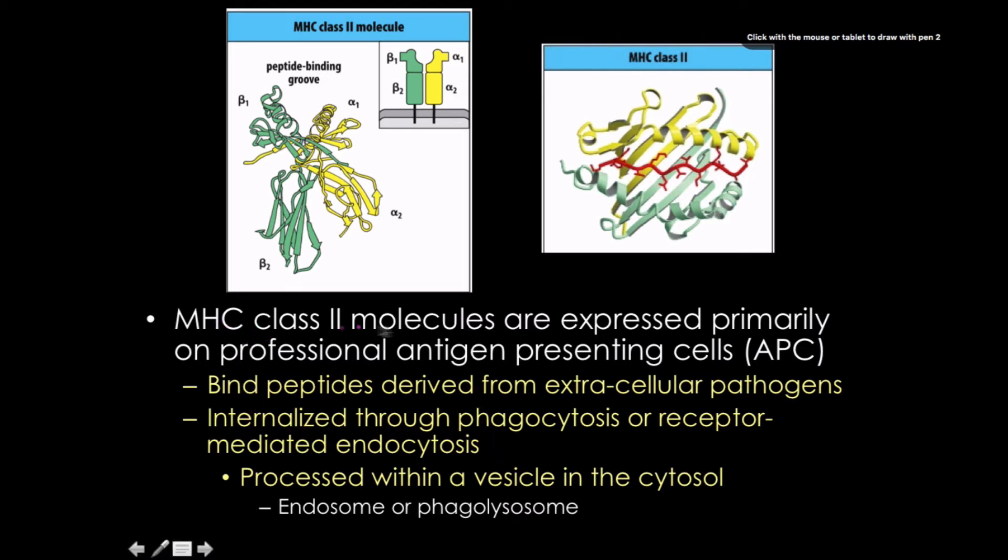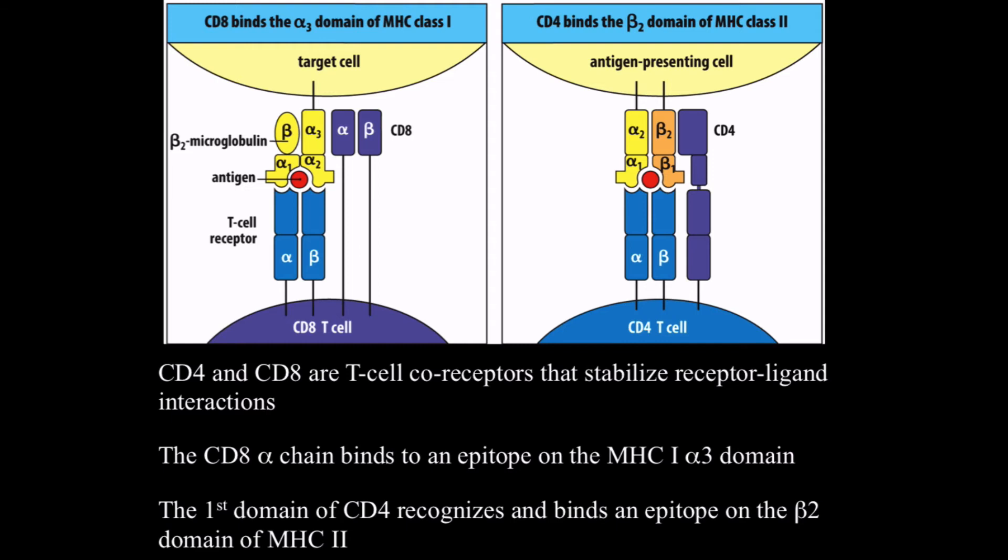But what is the function of this? This is the function of expressing primary antigen-presenting cells. So my skin cells do not have MHC class 2. My skin cells have MHC class 1. And this is predominantly dealing with extracellular pathogens, pathogens that have been phagocytized, pathogens that we've eaten and that are taking place through receptor-mediated endocytosis or through phagocytosis, processed within a vesicle. And we'll talk about the mechanism of that in a little bit more detail.